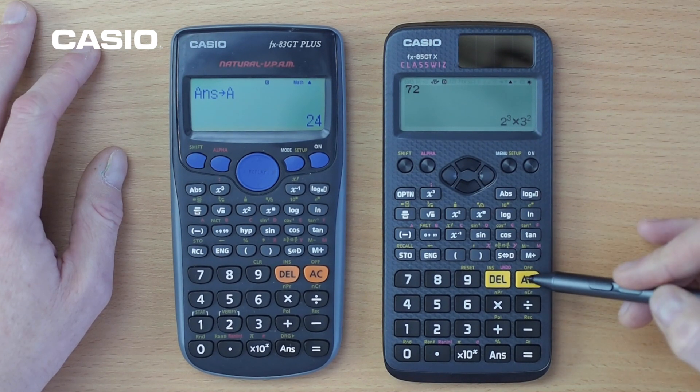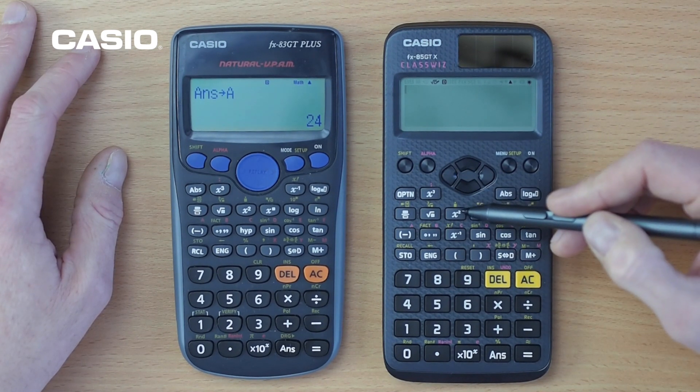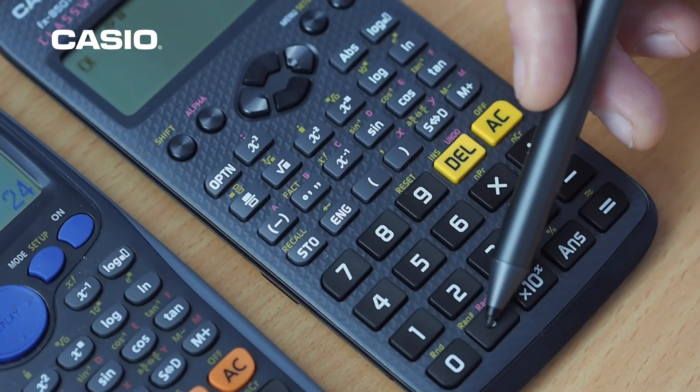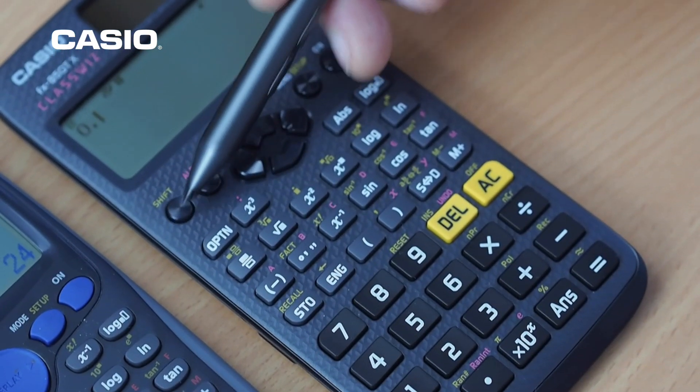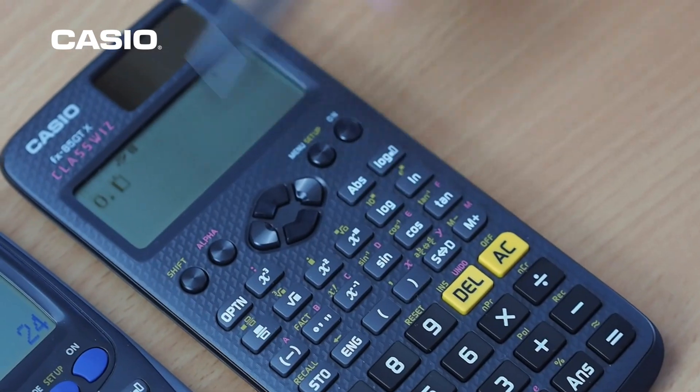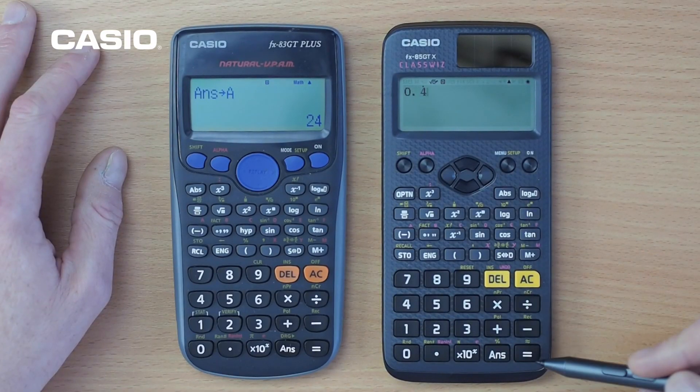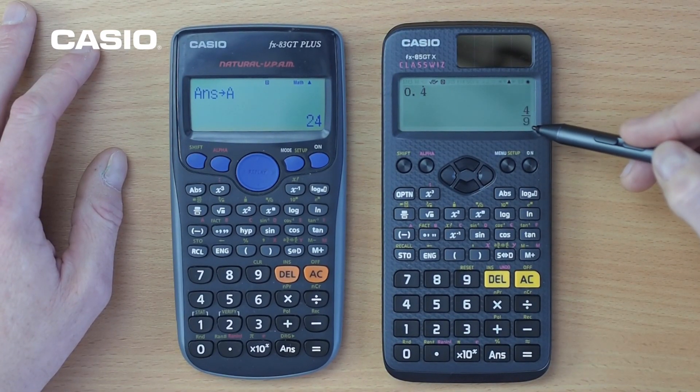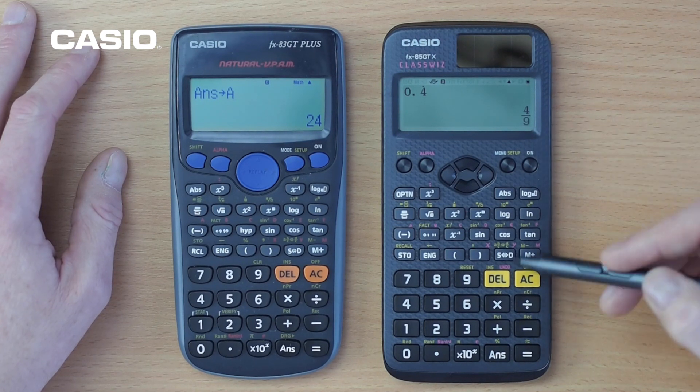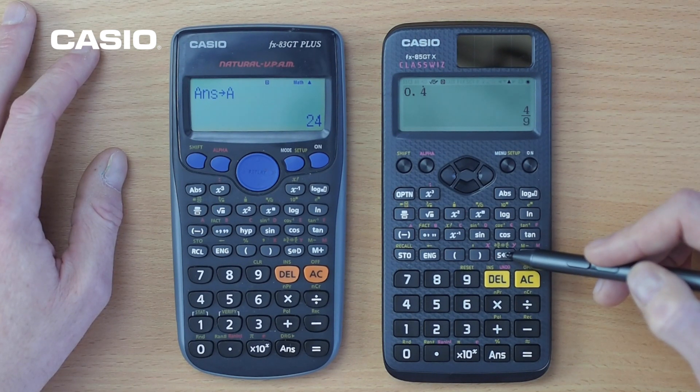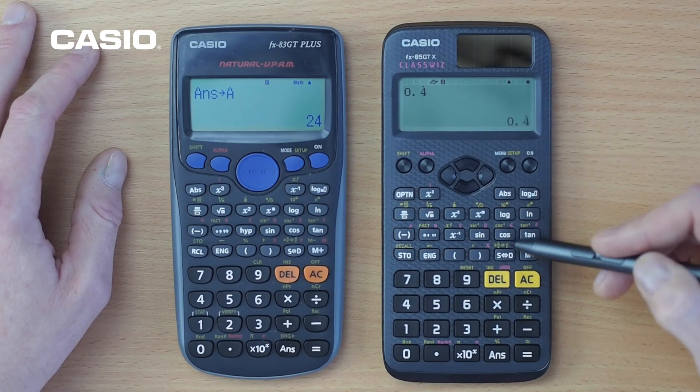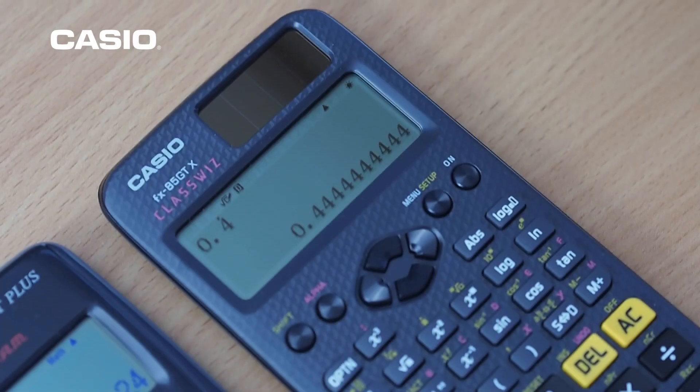We've also got the option in the calculator to look at some recurring decimals. So if we want to look at zero point and then we press the recurring decimal key and we can have 0.4. Press equals. There it is, displayed as a fraction of four ninths. And we can cycle between the different forms using the STD button. So we've got 0.4 recurring and we've got all the decimals there as well.